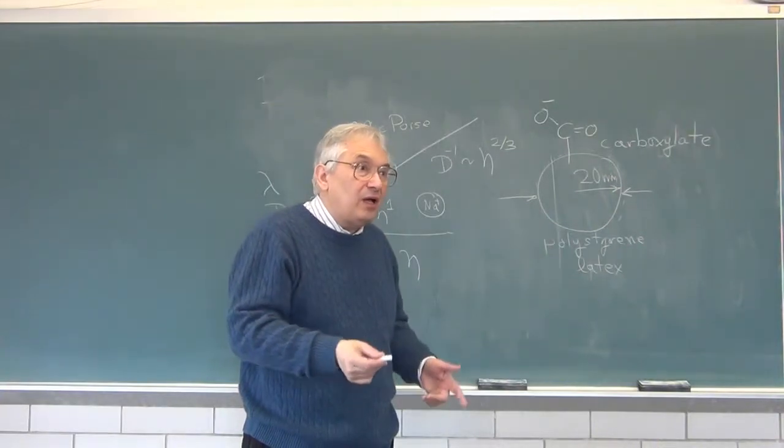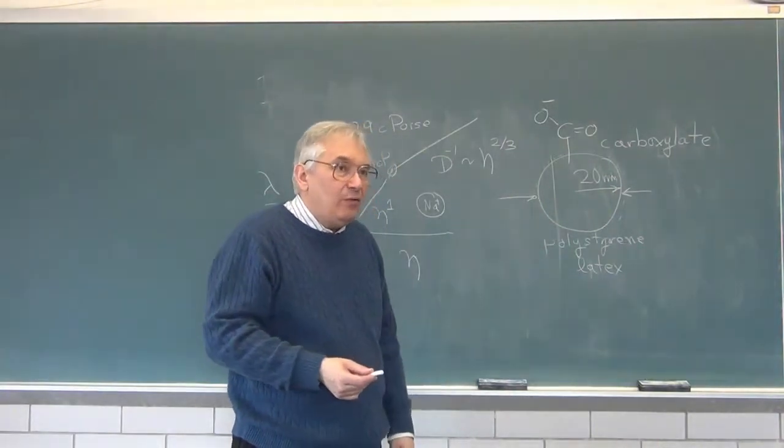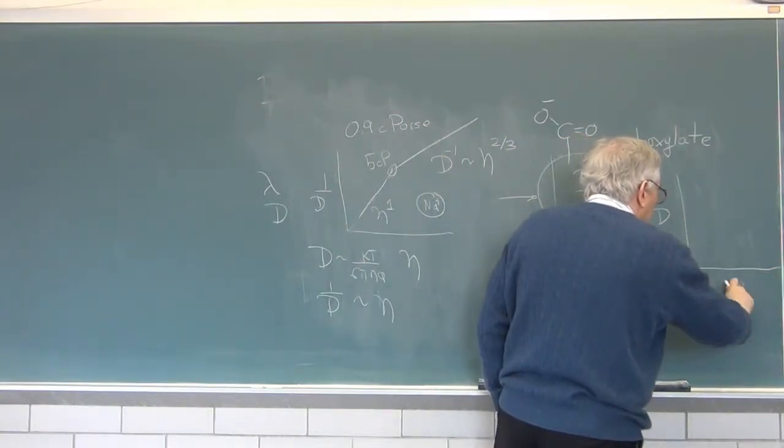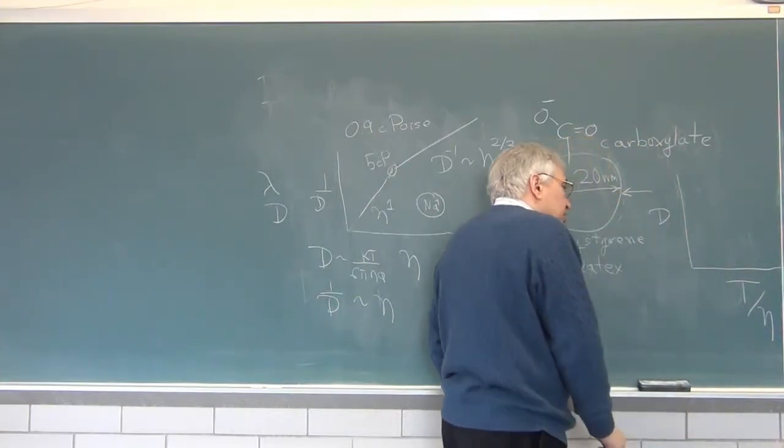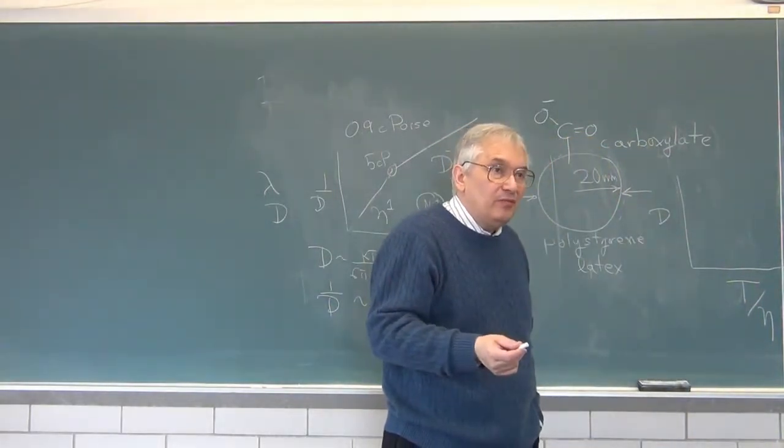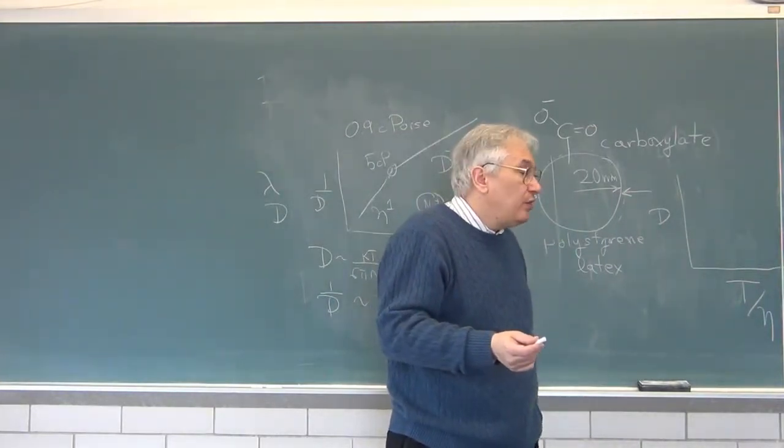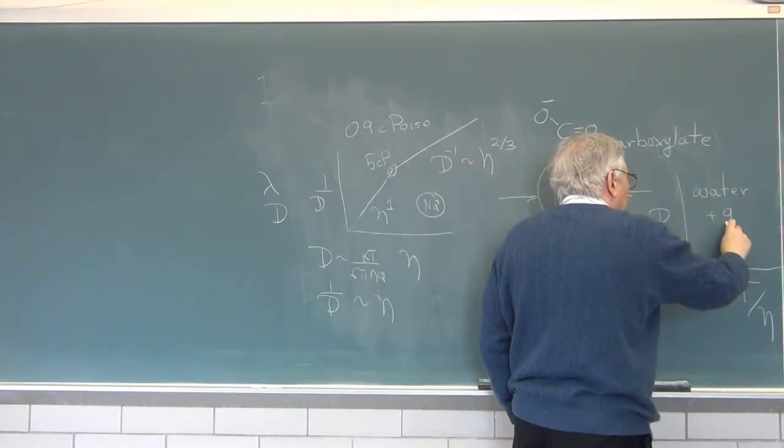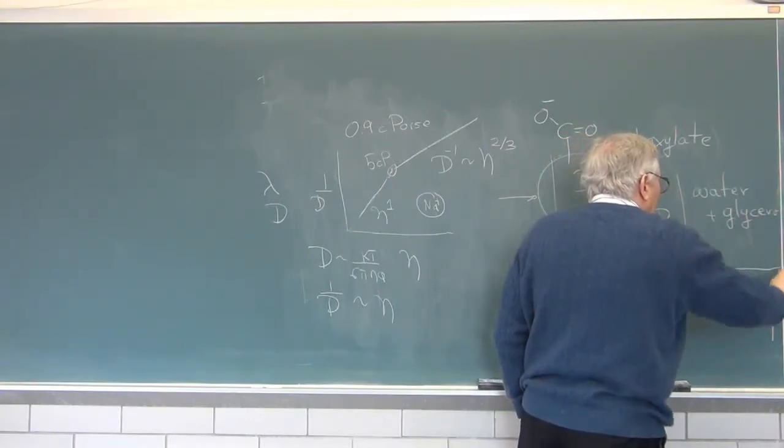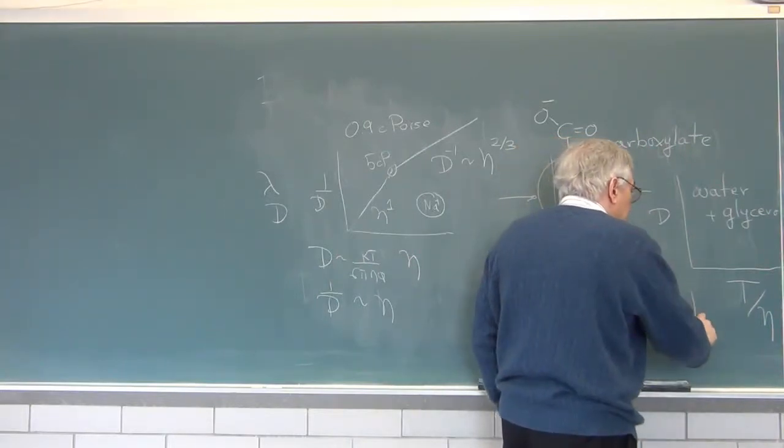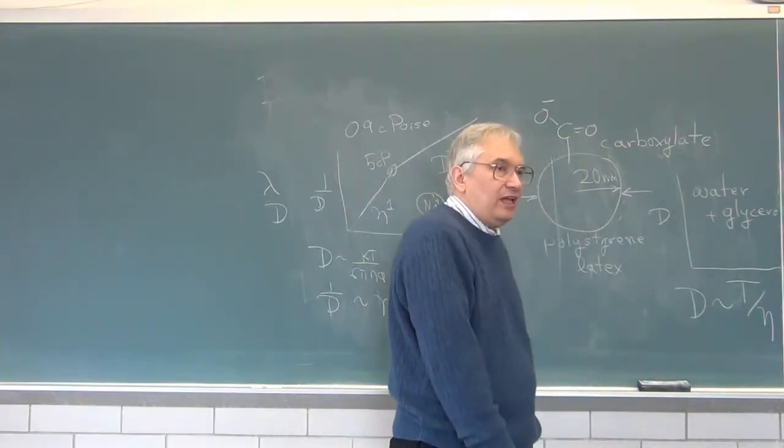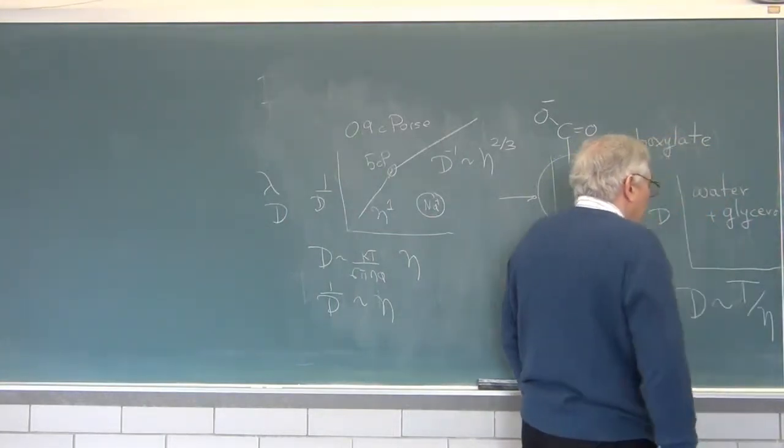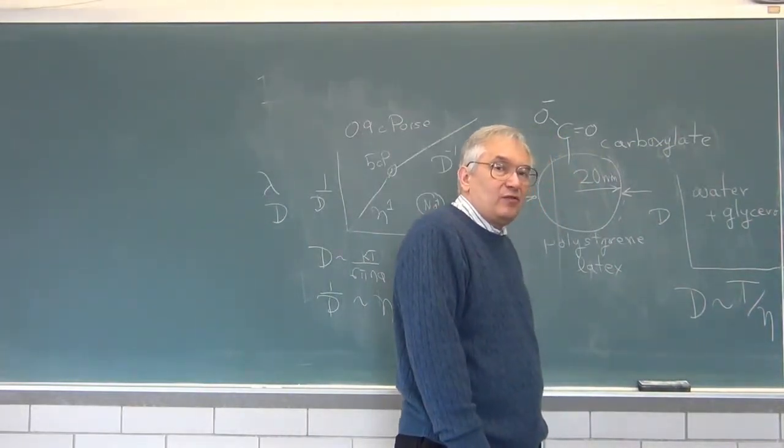And we will measure diffusion coefficient using light scattering against T over eta. And there are two ways to change the viscosity. You can change the temperature, at least over a moderate range. And you can change the viscosity. For example, instead of working in water, you can work in water plus glycerol. And so back in about 1979, I did this, and we show that D is very nicely linear in T over eta.